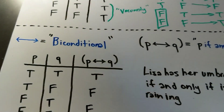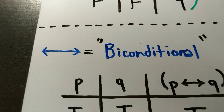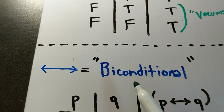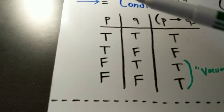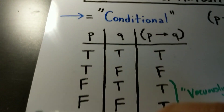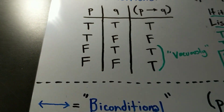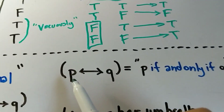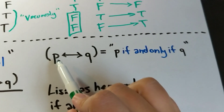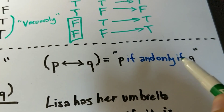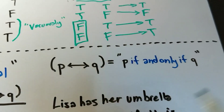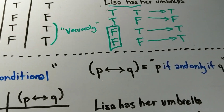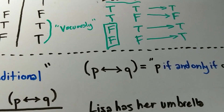Our last operator is the double arrow — the arrow that points both directions. This is called a biconditional, which is not surprising because you have two conditionals. We would read this statement as 'P if and only if Q.' You want to think of this as a conditional that works in both directions.